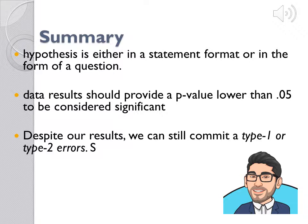Essentially, there is a lot more going on with a hypothesis than what many of us have learned in the third grade when being taught about the scientific method. To summarize: a hypothesis is either in a statement format or in the form of a question; data results should provide a p-value lower than .05 to be considered significant; and despite our results, we can still commit a type 1 or type 2 error. Thank you again — I hope you enjoyed this presentation. Have a wonderful day.